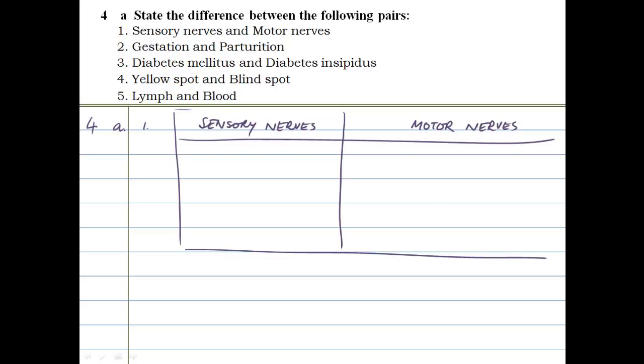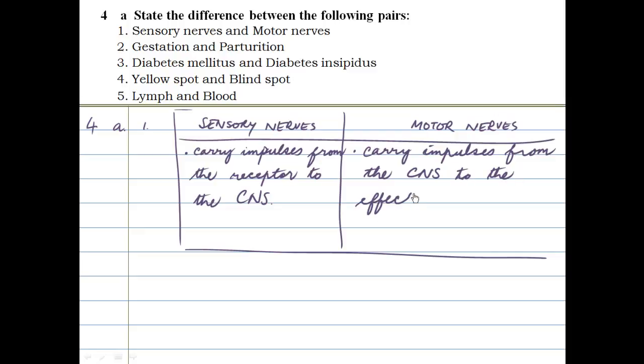So sensory nerves carry impulses from the receptor to the CNS or the central nervous system, whereas the motor nerves carry impulses from the CNS to the effector, which is the muscle or the gland. So that's the first one done.